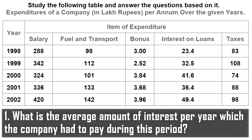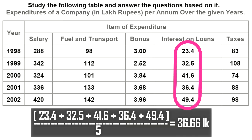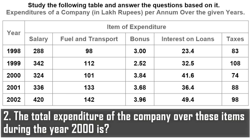The first question asks: what is the average amount of interest per year which the company had to pay during this period? To answer this, you need to find the mean of the interest values: 23.4, 32.5, 41.6, 36.4, and 49.4 lakh per annum. The required answer is 36.66 lakhs.